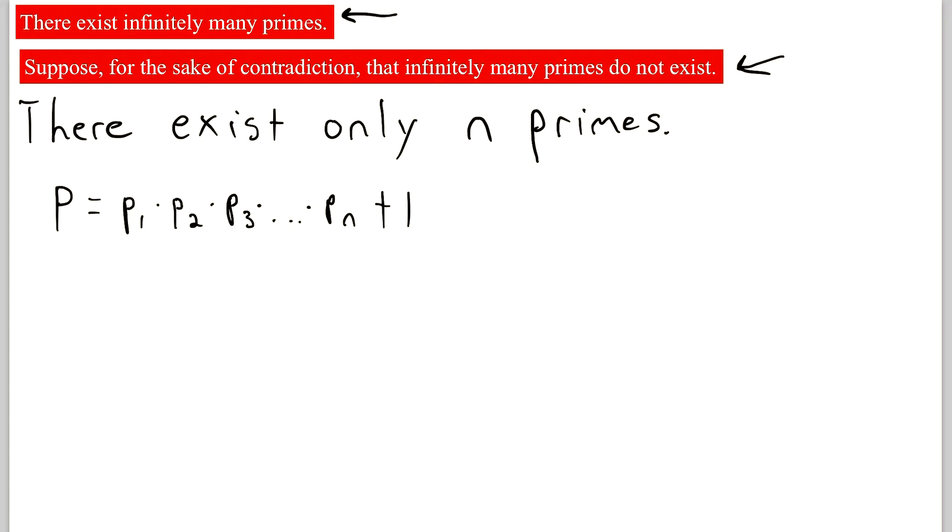So now we know a couple things about this number P. We know that P is greater than every prime. So we'll write P is greater than Pi for all 1 less than or equal to i less than or equal to n, because we know that i ranges from 1, 2, 3, all the way up to n. So P is greater than every prime, and that is clear by how P is defined.